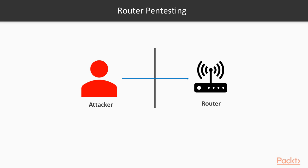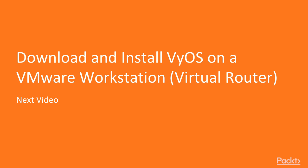This is all about the basics of router pen testing and how an attacker can attack a router. We will perform practicals from the next video. In the next video, I'm going to show you how to download and install VIos, which is a virtual router in VMware Workstation. Thank you.